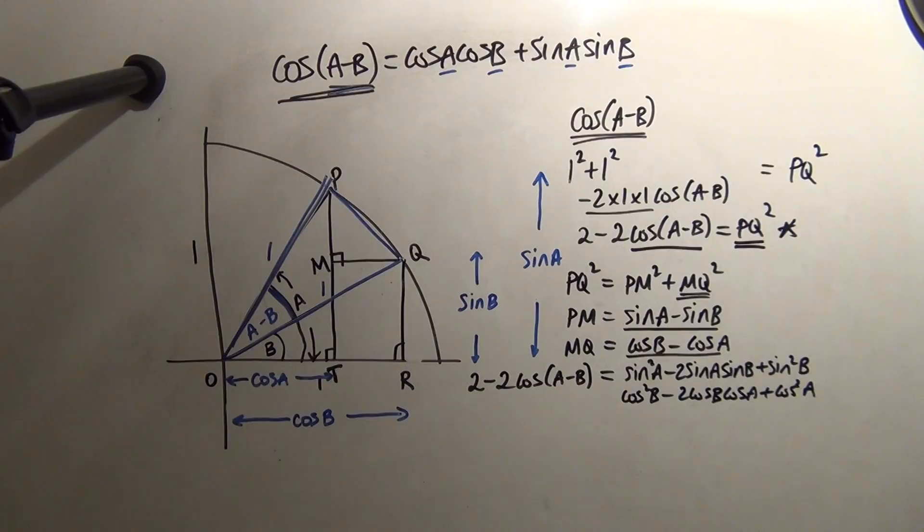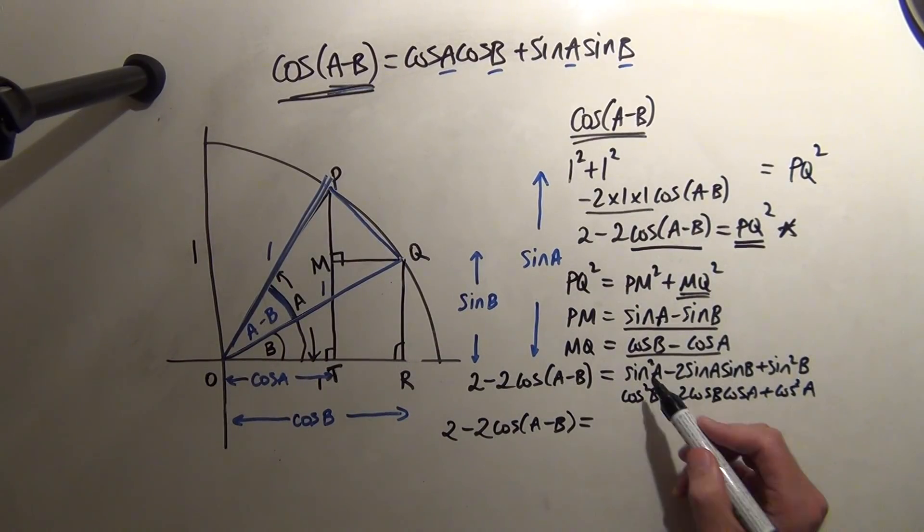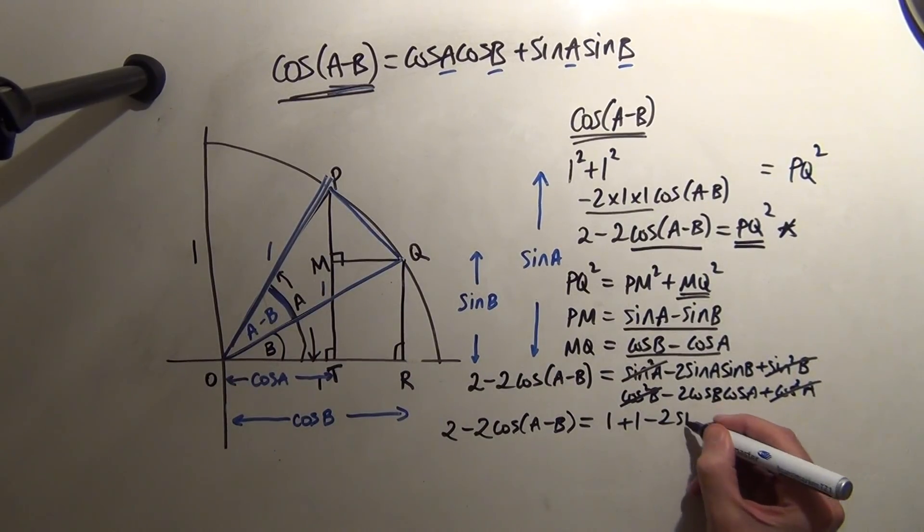Now, believe it or not, this is going to give me this, but be patient. We've got 2 here, minus 2cos(A-B) is, well, the lovely thing about this is, from first principle, sin²A + cos²A is 1. Sin²B + cos²B is another one. And then we've just got what's left.